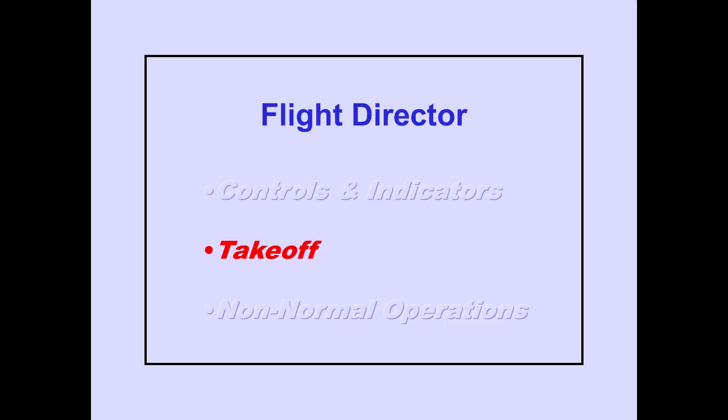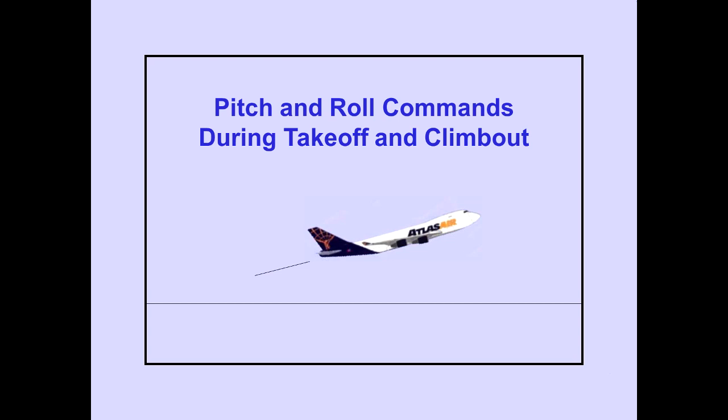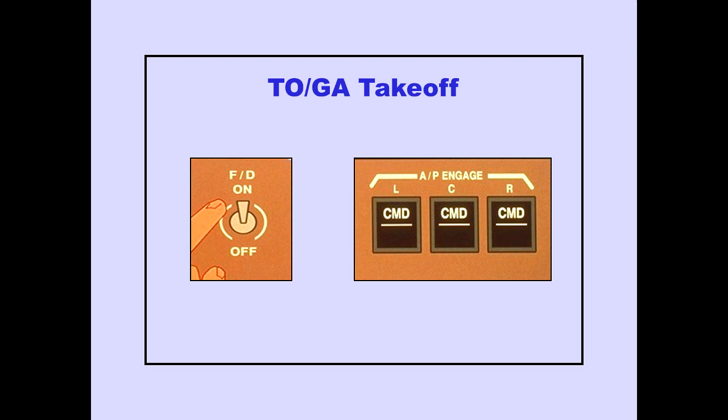Now let's look at the flight director during takeoff. The TOGA takeoff function is a combined pitch and roll mode and is a flight director-only mode. In this mode, the flight director provides pitch and roll commands during takeoff and climb-out. The TOGA takeoff function can only be selected while on the ground. It is selected by turning the first flight director switch on with all autopilots disengaged.